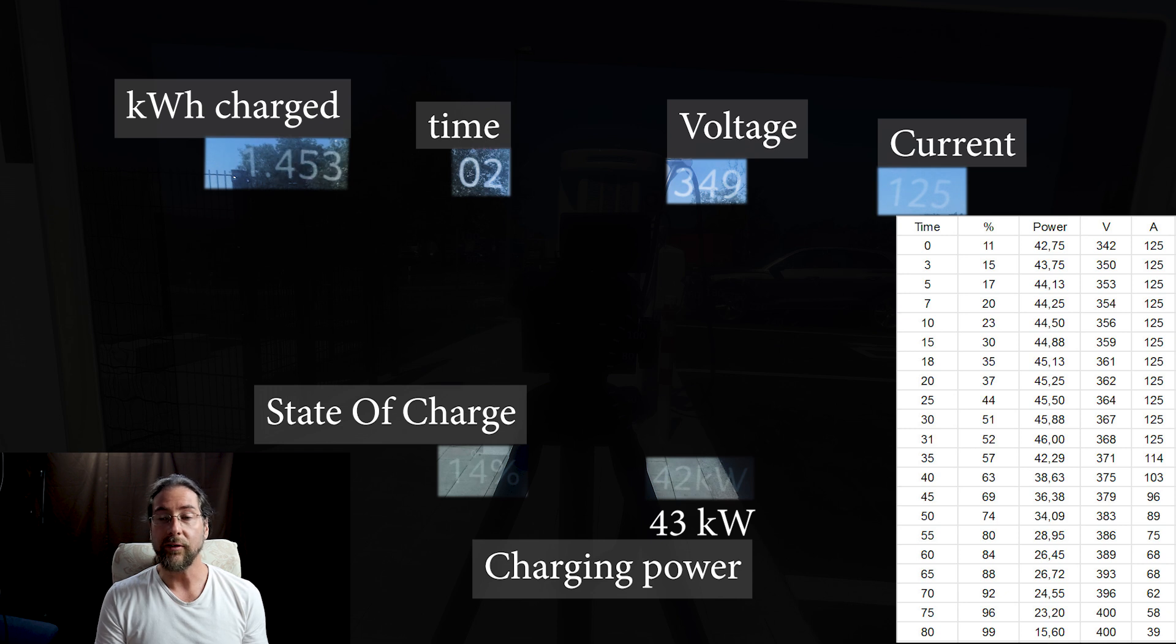Like I always said in all the other videos, 125 amp is the peak for the Renault Zoe. It's very fast at 15 percent, two and a half kilowatt hours charged after four minutes. I started at 11 percent.